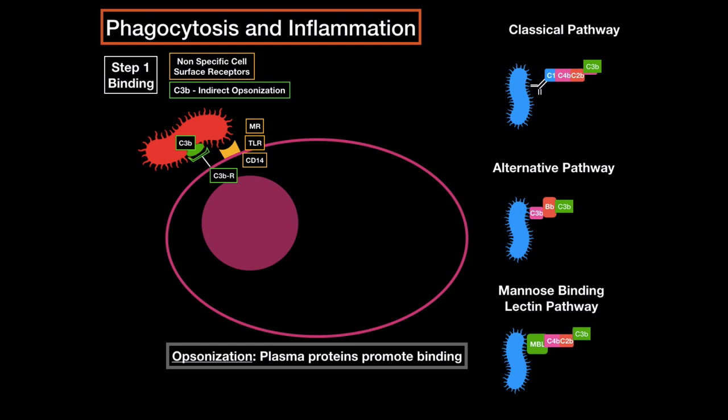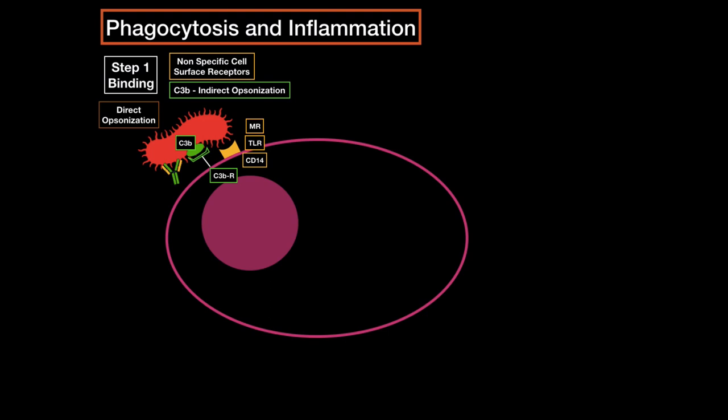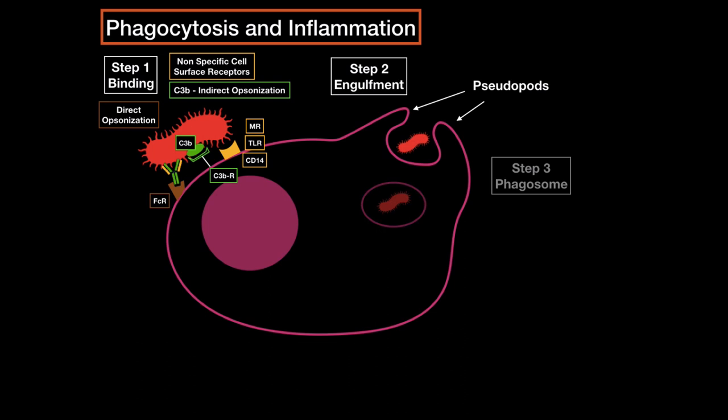The third way is through direct opsonization, which includes an antibody and an FCR receptor, because the receptor binds to the FC region of the antibody. So that was step one — binding. Step two is engulfment through forming pseudopods around the bacteria. Step three is when the phagocyte forms a phagosome — a vesicle inside the phagocyte to kill the bacteria. It's kind of like a prison.